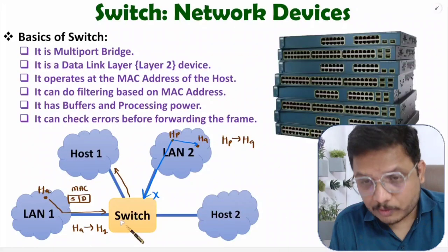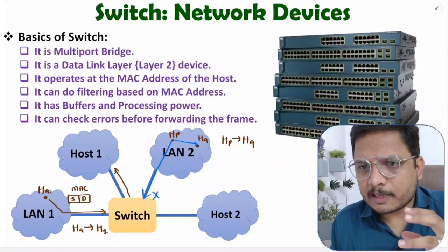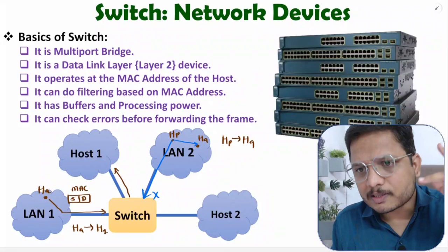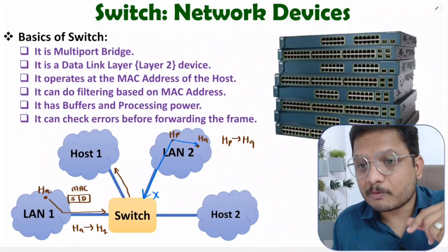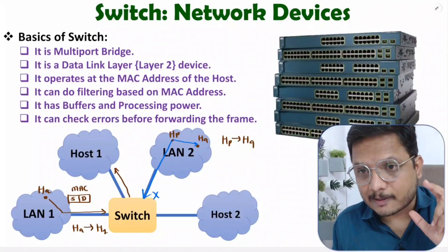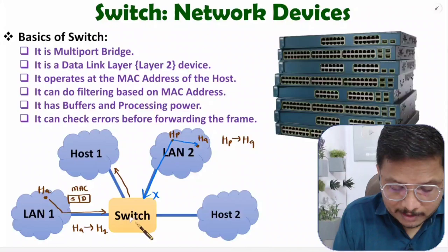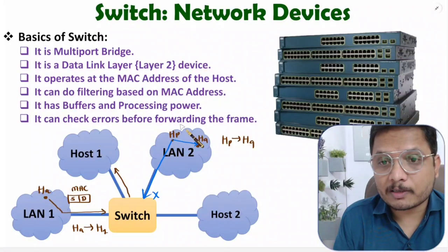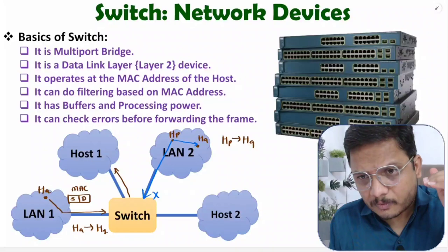For error checking, the switch uses processing power — like CRC check or checksum. Nowadays in 2023, switches come with processing power, but older versions had combinational circuits to calculate the CRC. So nowadays switches are available with processing power to check errors before forwarding the frame.